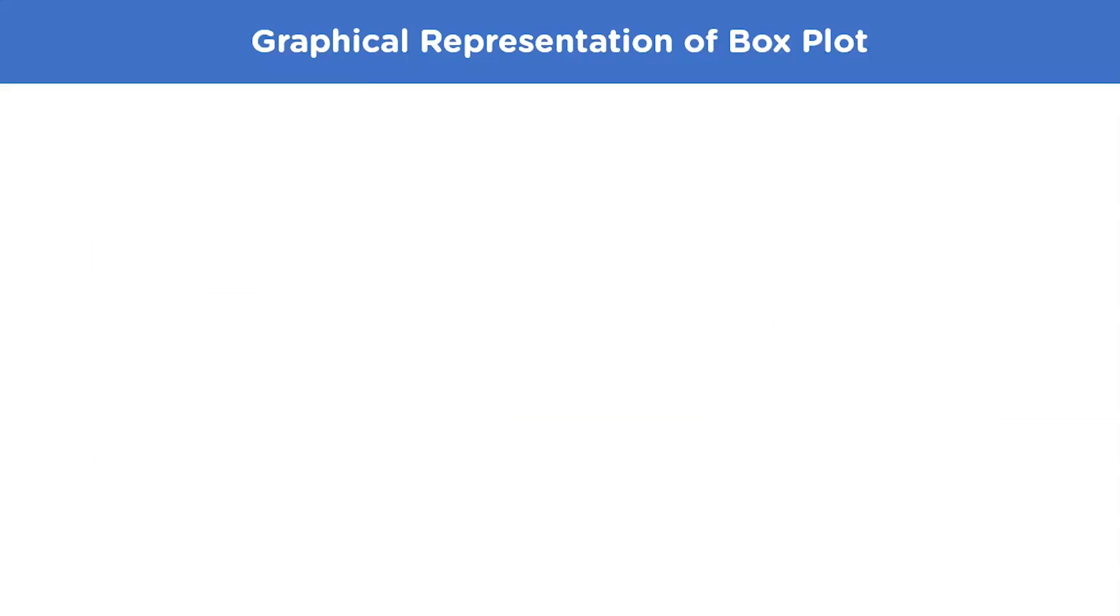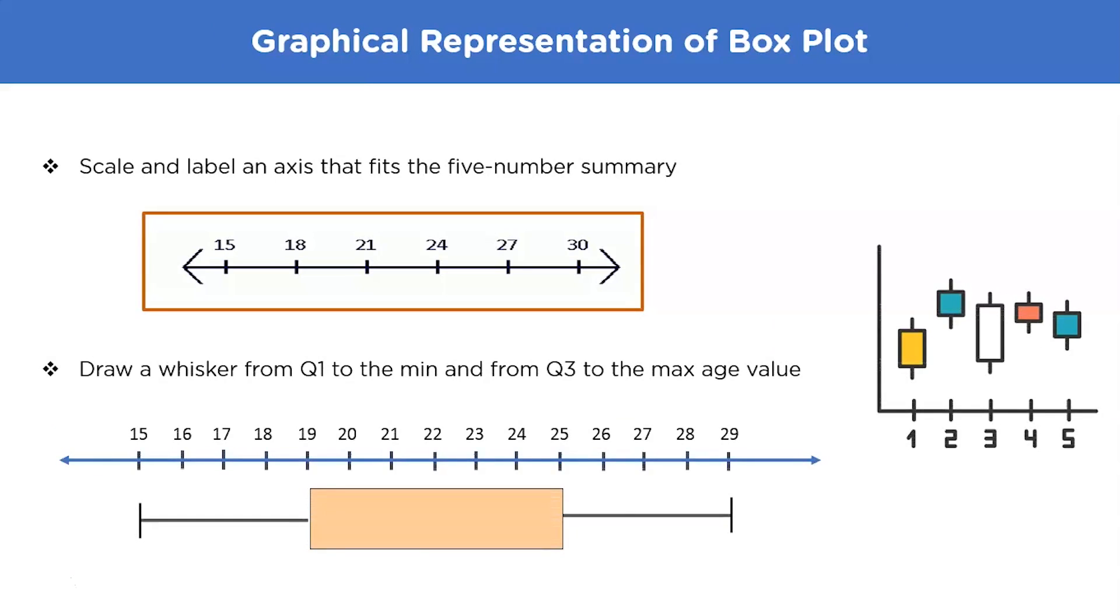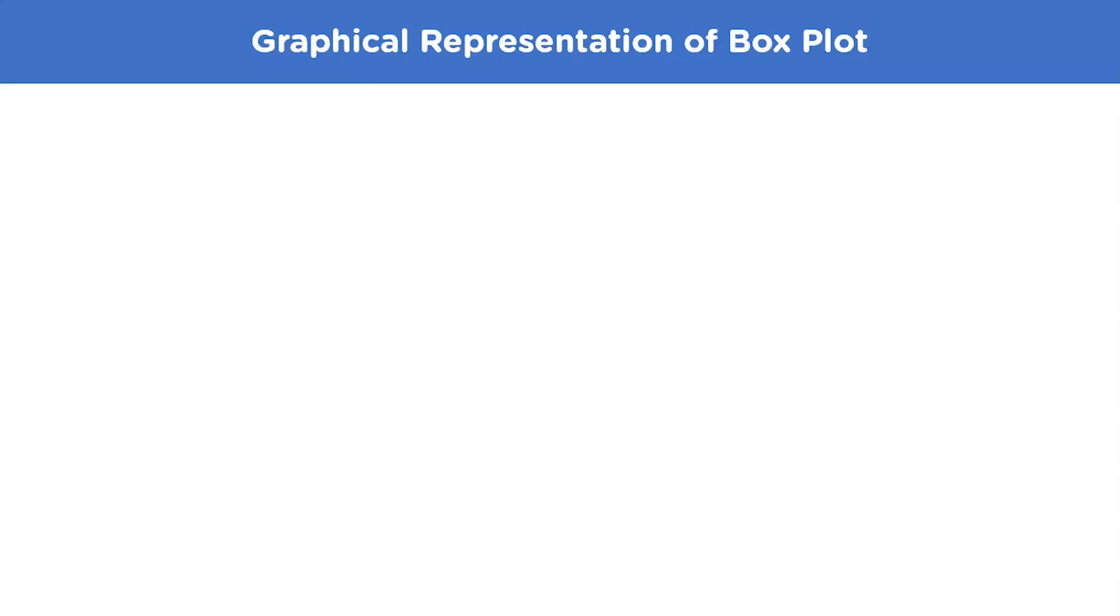So to create the box plot, the first step would be to make a number line with proper scaling. After this, we just have to draw the whisker from Q1 to the minimum and Q3 to the maximum age value. Now that we have created the box plot, let's understand what these values actually mean.